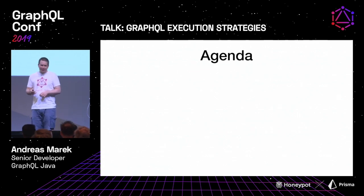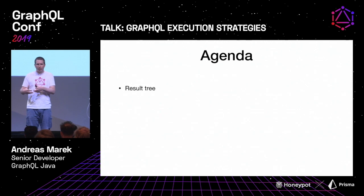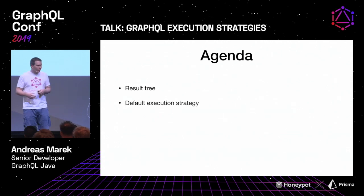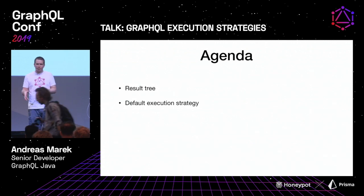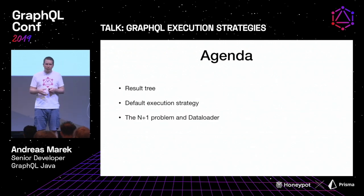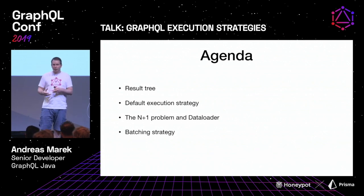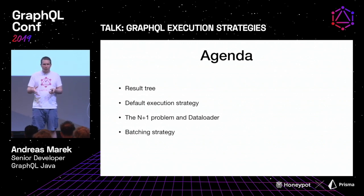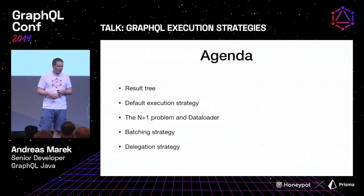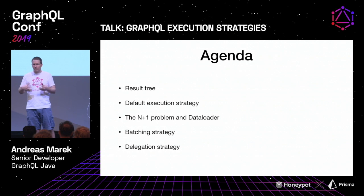So what are we going to do today? First I will talk about the result tree, which is needed to discuss the other topics clearly. Then we will talk about the default execution strategy — what is implemented in every GraphQL server and specified by the spec. Then we will look at the n+1 problem and how Data Loader helps solve it. And finally we will look at alternative strategies: a batching strategy and a delegation strategy, which is related to schema composition.